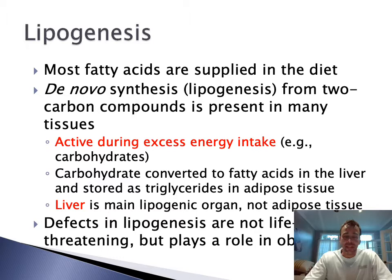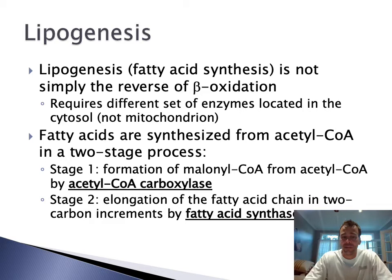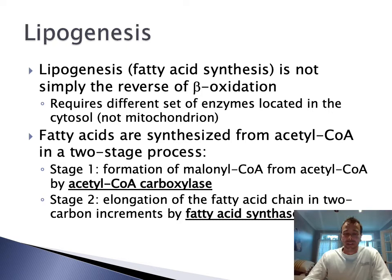Defects in this process are not life threatening, but obviously can play a role in obesity. Fatty acid synthesis is not simply the reverse of beta oxidation — it requires a whole different set of enzymes located in the cytosol, not in the mitochondria. There are two basic stages. Stage one is the formation of malonyl-CoA from acetyl-CoA by acetyl-CoA carboxylase. Stage two is elongation of fatty acids by a multi-unit enzyme known as fatty acid synthase. Elongation occurs in two-carbon increments, which it does have in common with beta oxidation, although it's a whole different set of enzymes and again, it's in the cytosol.